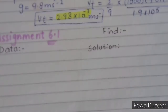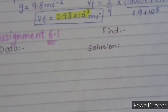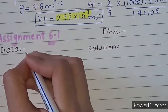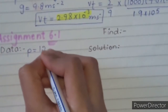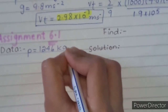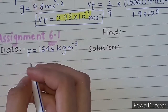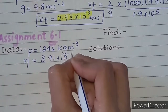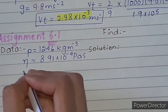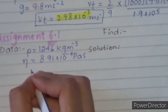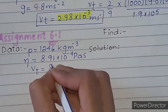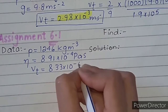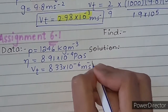Next problem, example 6.1 on page number 199. Density is given as 1246 kg per meter cubed, viscosity η = 8.91×10⁻⁴ Pascal second, and the terminal velocity is given as 8.33×10⁻⁶ meter per second. We need to find the radius.